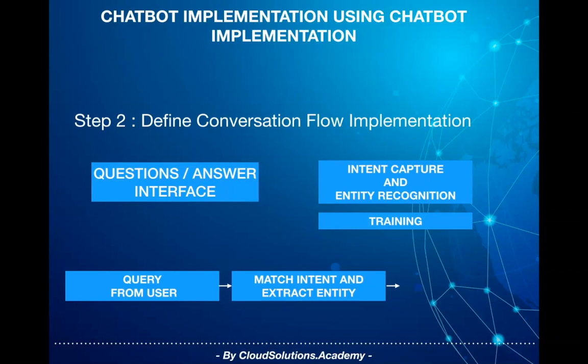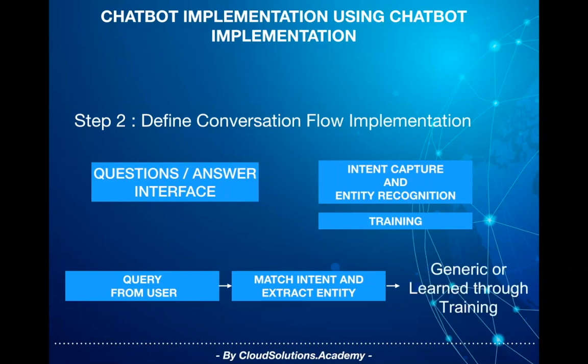Here, the entities can be a country list like UK and US. These entities can be generic enough to be recognized automatically by the cloud provider, or the cloud provider will give you some mechanism where you can provide or train these entities, including synonyms, through some tooling or approach provided by these cloud vendors.